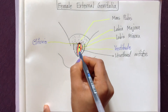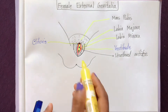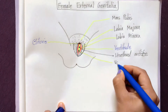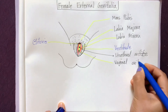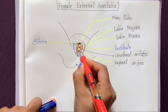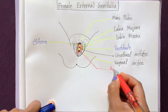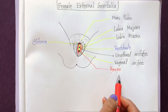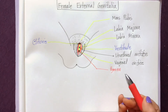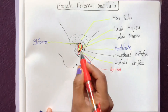Below the urethral orifice, another opening is present called the external vaginal orifice. The vaginal orifice is partially covered by a membrane called the hymen. The hymen is often torn during the first sexual intercourse, but it can also be broken by sudden falls or sports-like activities such as swimming or horse riding.